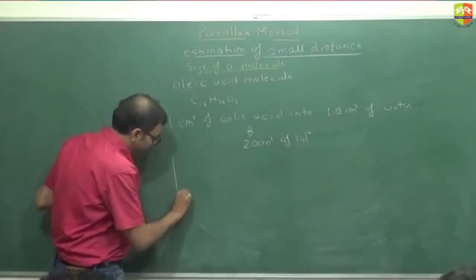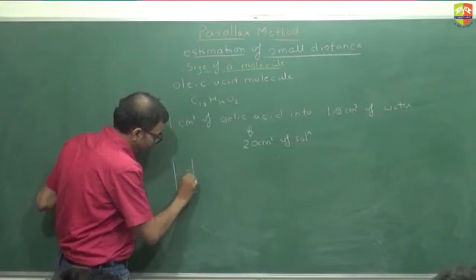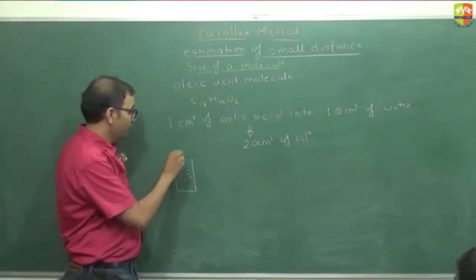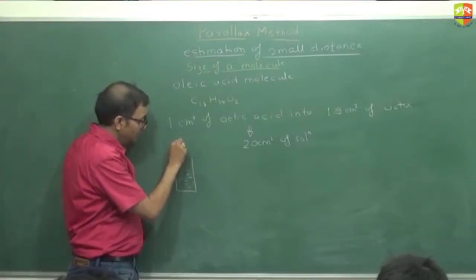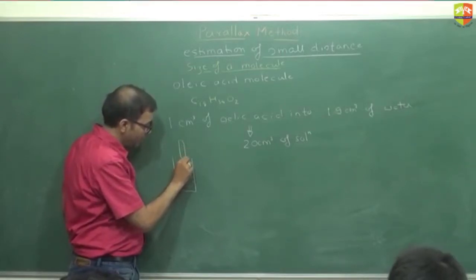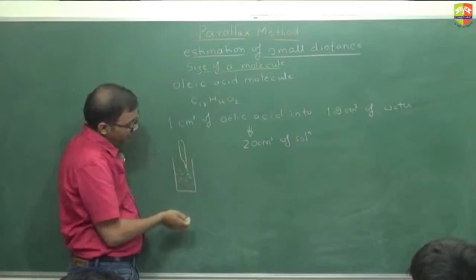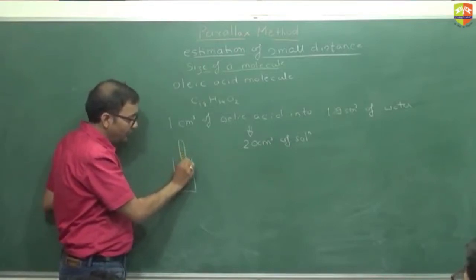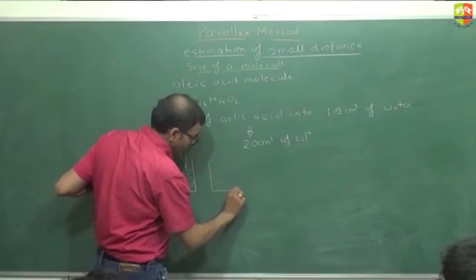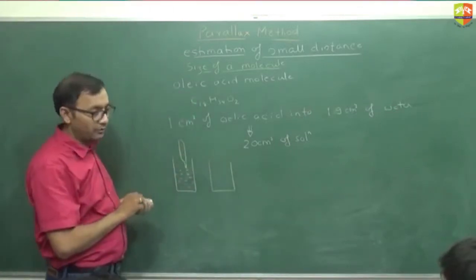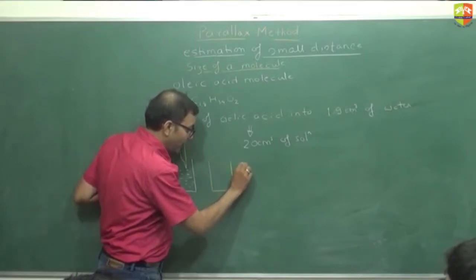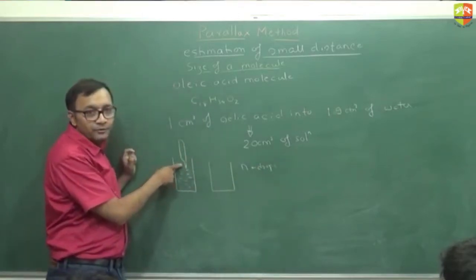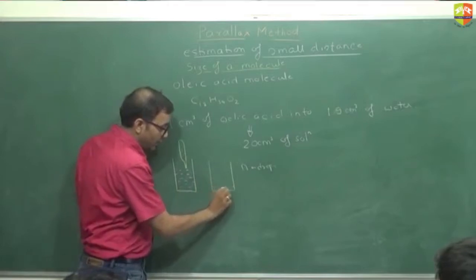Then you have 20 ml of this solution. Using a dropper — like one used to fill an ink pen — you press the dropper, put it inside the solution, draw some solution in, then drop n drops of this solution into an empty test tube or beaker.